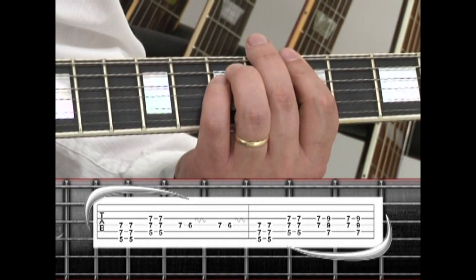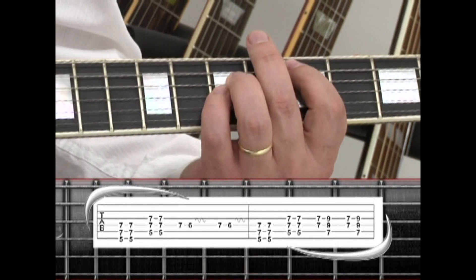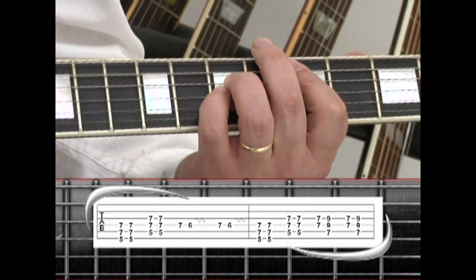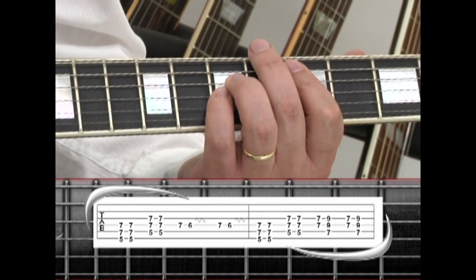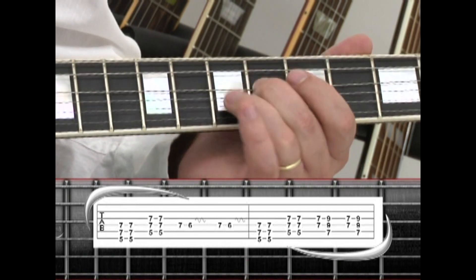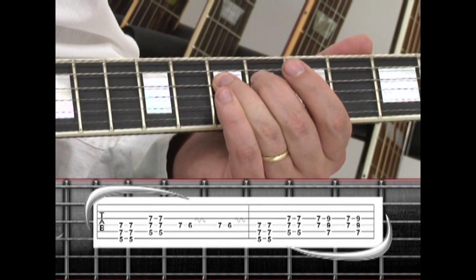Then switch to the 5th string D5 we learned earlier, frets 5, 7, and 7, strum twice, then single notes on the 4th string 7 to 6 with vibrato, and repeat, 7 to 6 with vibrato.